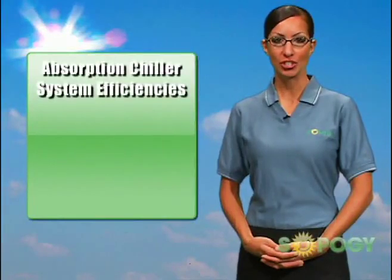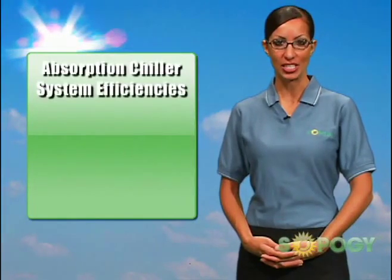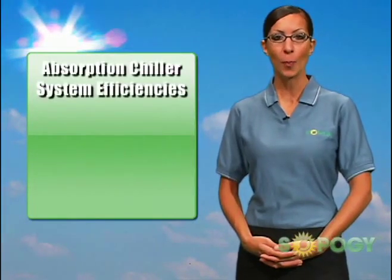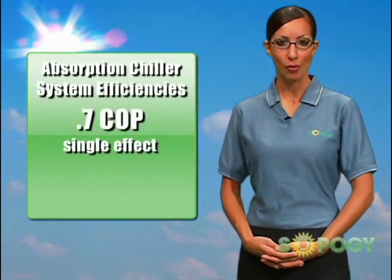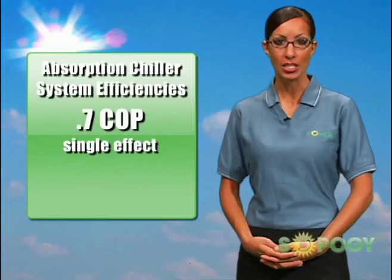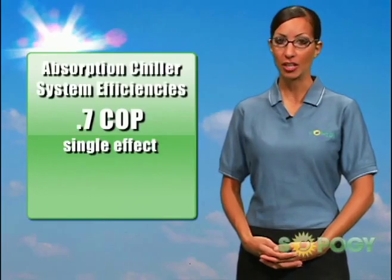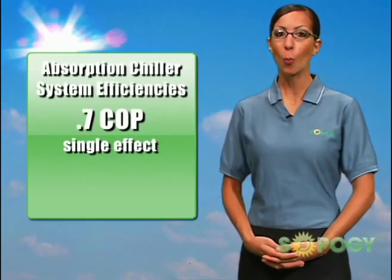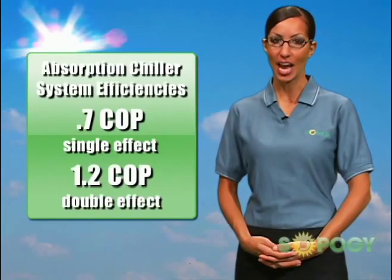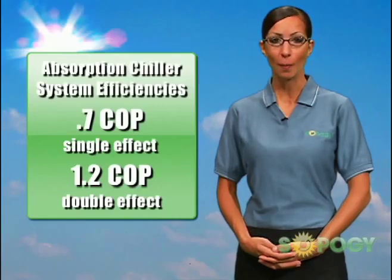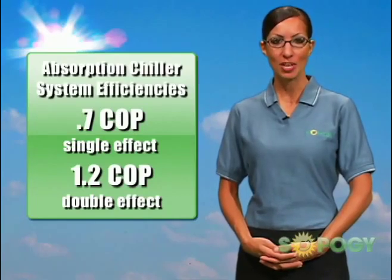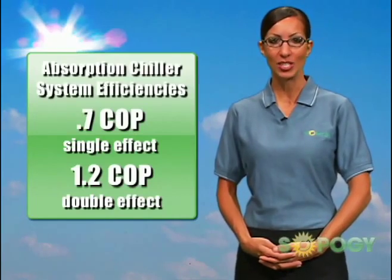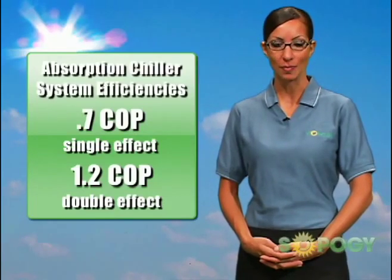Absorption chiller system efficiencies are often around 0.7 COP, or coefficient of performance, for a single effect, or 1.2 for a double effect absorption chiller, making for a good complement to the efficient SOPOG micro-CSP solar collector.